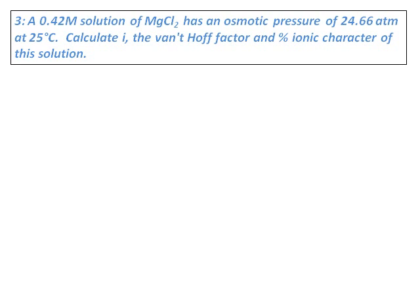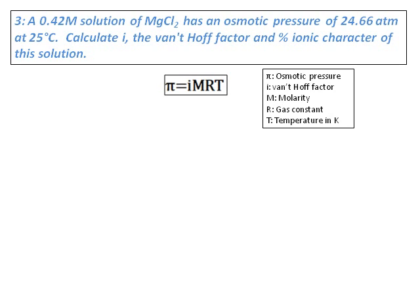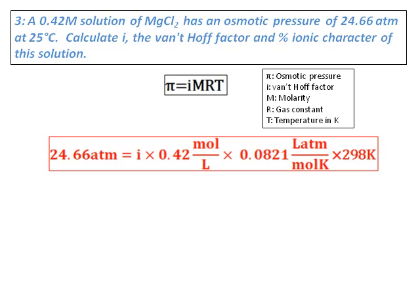However, in solution, ion pair formation can make i less than expected. That's why we're calculating the percent ionic character. Using π = iMRT, we can calculate i. π and molarity are given, we know R, and we convert temperature from Celsius to Kelvin by adding 273. Calculating i gives us 2.4.